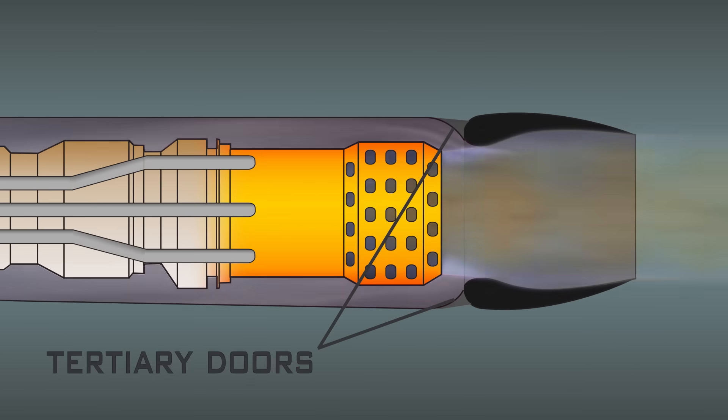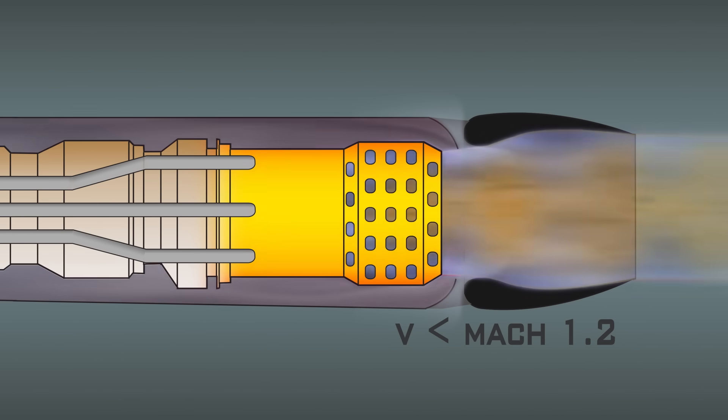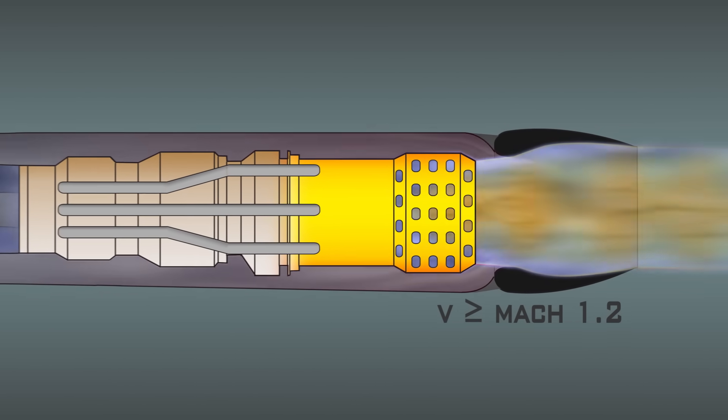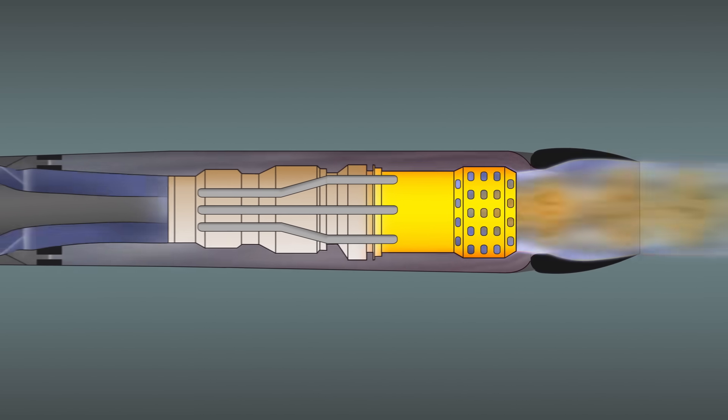Before the ejector are a set of tertiary doors that also open at low speeds to prevent the ejector from creating places of drag caused by not enough air and exhaust flowing through it. These close at Mach 1.2 and stay closed for most of the Blackbird's flight, opening only for takeoff, landing, and refueling.